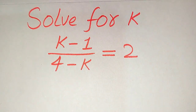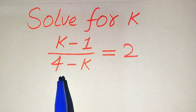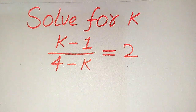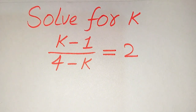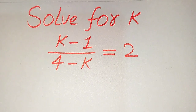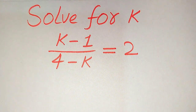Hello everyone. How to solve this problem: for the values of k, if we have (k-1) divided by (4-k) equals 2. We solve this problem for all the values of k. First we find all the roots of this equation, and at the end we will verify which of the roots are solutions and which are extraneous roots. Please watch this video to the end.